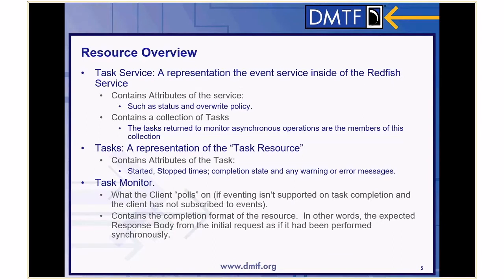The resources involved: you've got a task service, that's the service doing the task, and it has attributes such as an overwrite policy and the status of the task service. There's also the collection of tasks so that an admin or someone with proper access rights can go in and look at all the tasks running in the system. Then there's the task itself — that's where the task resource is — and it contains attributes like when did it start, when did it stop, what state is it in, any warnings, any messages, that kind of thing.